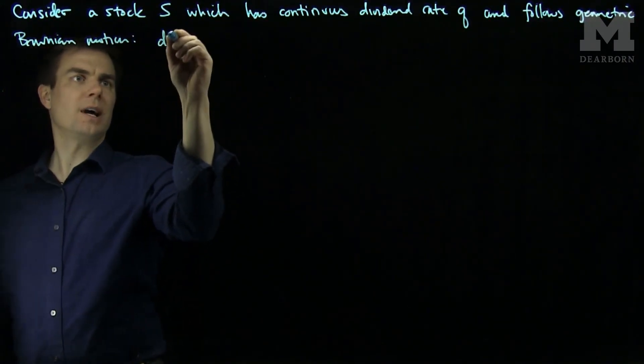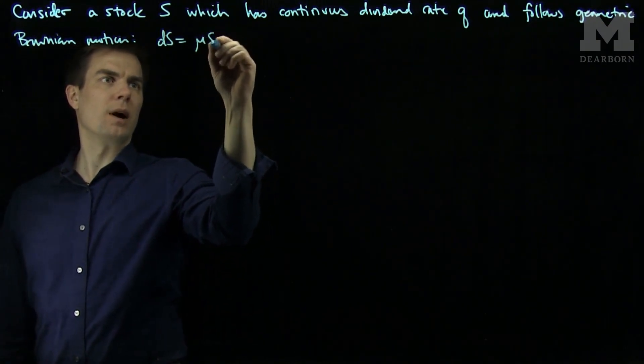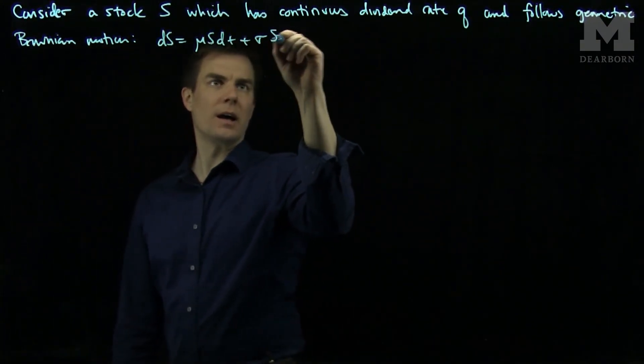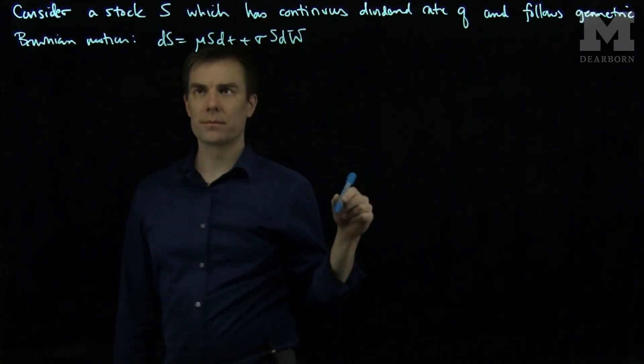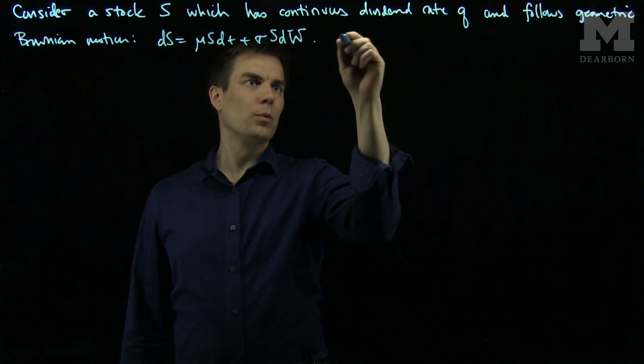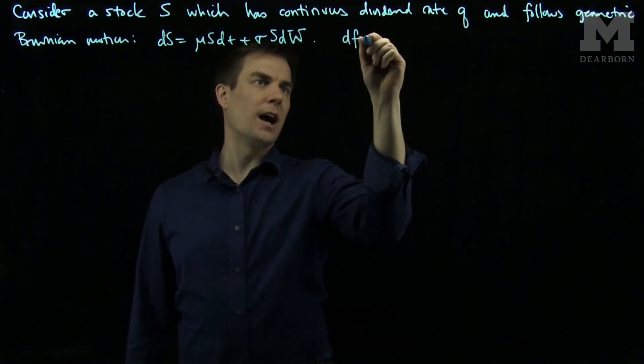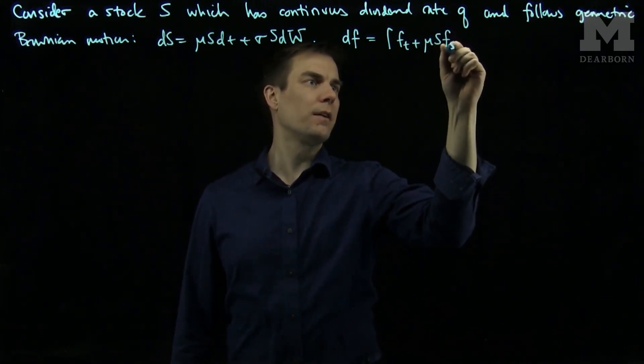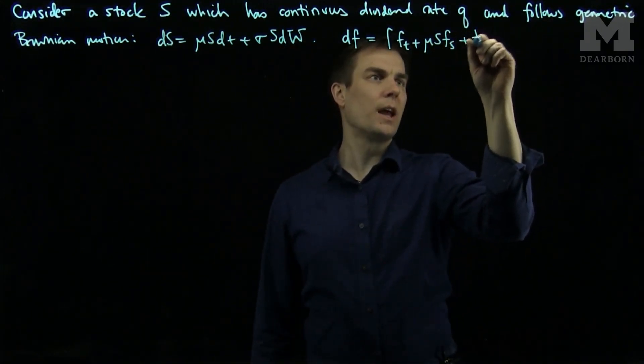So dS is mu S dt plus sigma S dW. And a derivative by Ito will satisfy the equation dF is Ft plus mu S Fs plus one half sigma squared S squared Fss dt